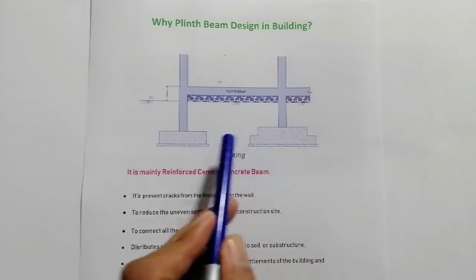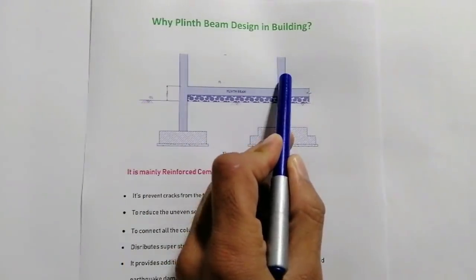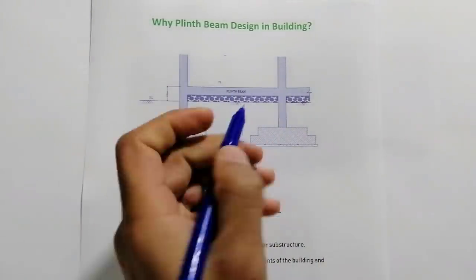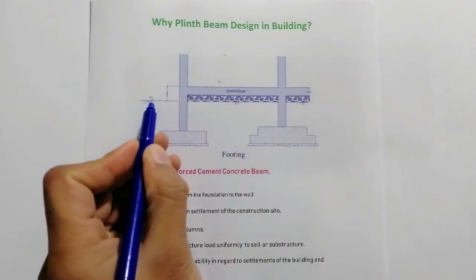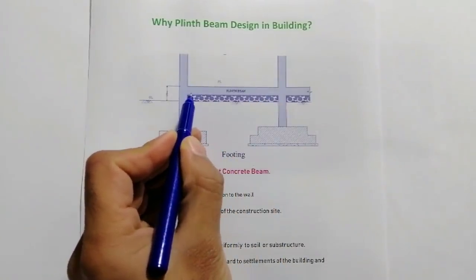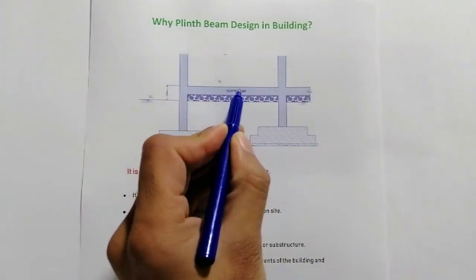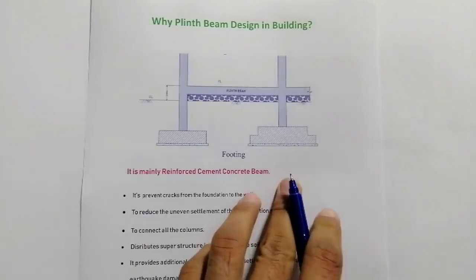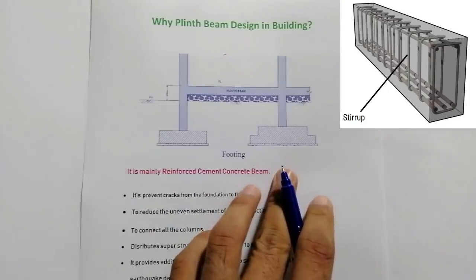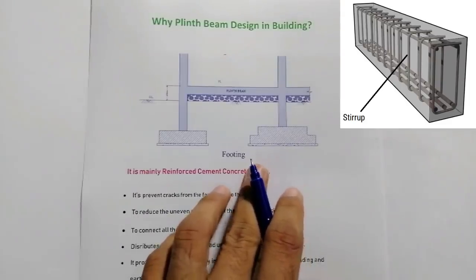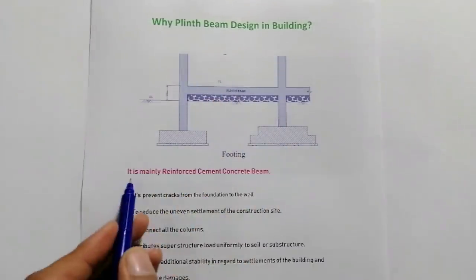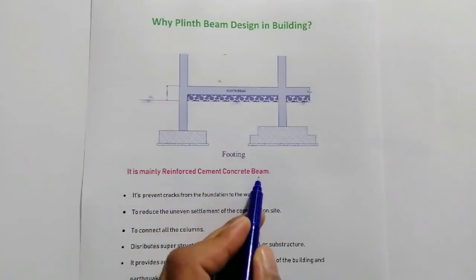Here you can see these two are footings for two columns. This is the plinth beam, and this is ground level. These two are footings for the two columns, and this is the depth of the plinth beam. First of all, plinth beam should be designed from RCC — reinforced cement concrete. It should not be constructed from PCC; it must be an RCC beam.